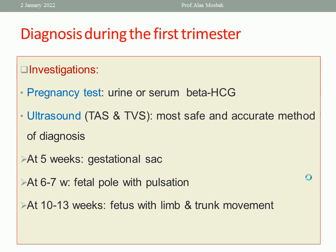What are the investigations in the first trimester? The first test is the pregnancy test, whether in urine or serum — beta-HCG positive or negative. Ultrasound is very important for diagnosis, both transvaginal sonography and transabdominal sonography. If you can diagnose with transabdominal, there is no need for transvaginal, so as not to cause discomfort to the patient. Transvaginal sonography may be needed in special cases. It is safe, and you should counsel your patient about that.